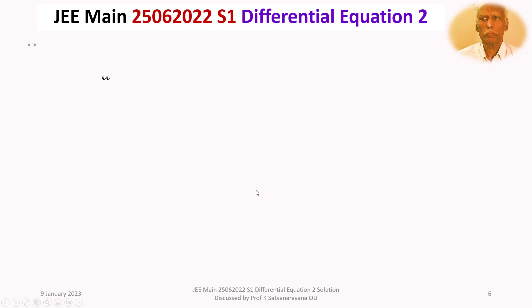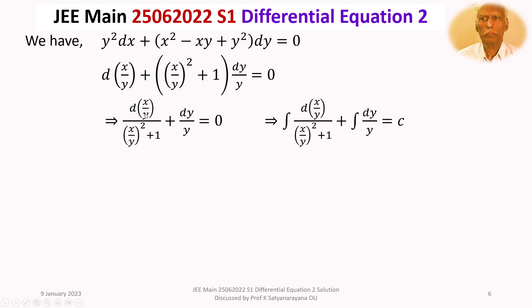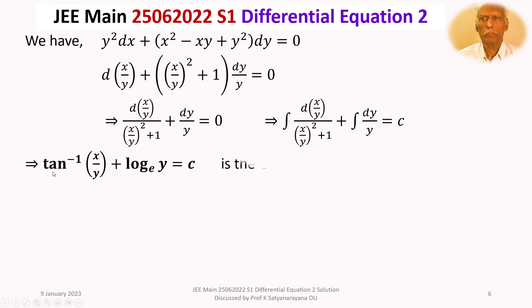Dividing throughout by (x/y)² + 1, we get d(x/y)/((x/y)² + 1) + dy/y = 0. Integrating both sides: the integral of d(x/y)/((x/y)² + 1) is tan⁻¹(x/y) (substituting x/y = t gives ∫dt/(t²+1) = tan⁻¹ t), and ∫dy/y = log y. So the general solution is tan⁻¹(x/y) + log_e(y) = c.